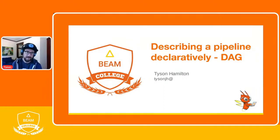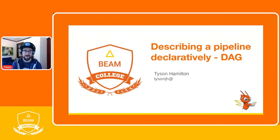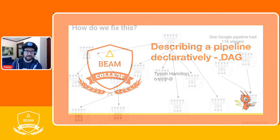In this talk, we're going to be going through what it means to describe a pipeline declaratively and the DAG, which is a directed acyclic graph — the representation of a pipeline that Apache Beam uses. It's an abstraction layer, but we'll get into that in more detail shortly. If you have questions, type them up. I'll try to answer them during the presentation; I might wait till the end so I don't lose my train of thought. Let's get started.